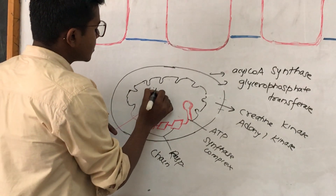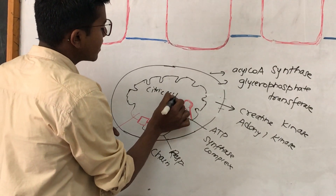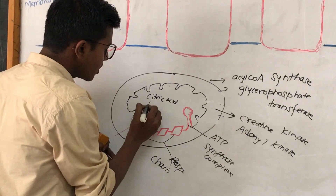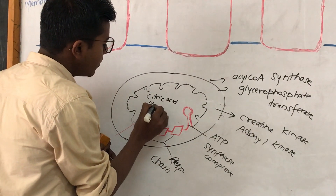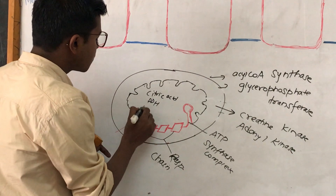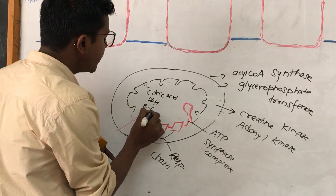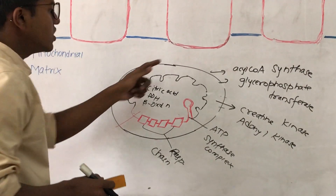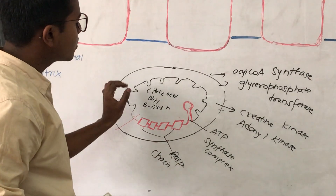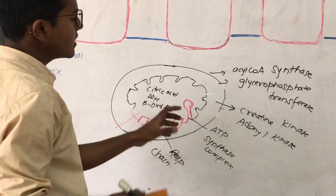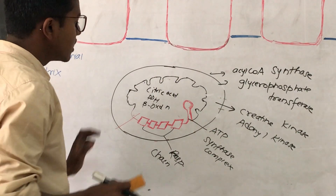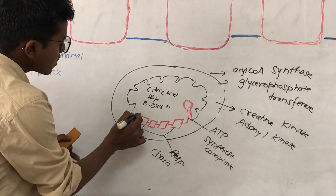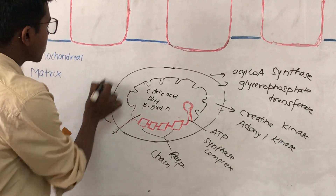In the mitochondrial matrix, the enzymes found are those of the citric acid cycle — that is, the enzymes of the Krebs cycle — pyruvate dehydrogenase, and the enzymes of beta oxidation of fats. This is a brief review of mitochondria and the various enzymes associated with its various membranes and matrix.